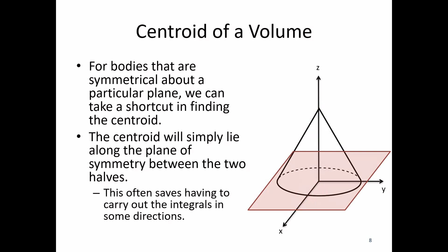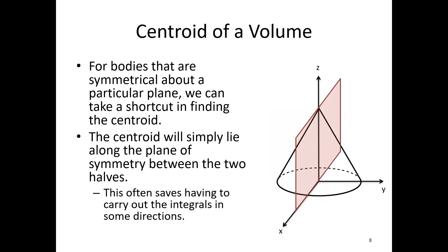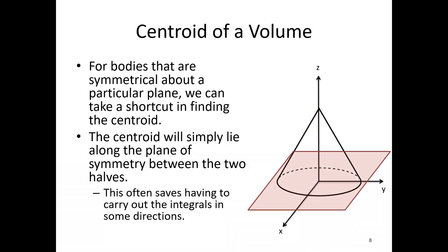The one direction that doesn't work is you can't draw a flat cross section in the xy plane, or anything parallel to the xy plane, where the top and bottom would be mirror images. If you moved it up, it'd be like an hourglass shape, or moved it down it'd be almost like a football shape — there's no way to make the top and bottom mirror images of this cone. So that's the one I actually have to calculate. In the xz and yz planes the shape is symmetrical, so I don't have to do the integration — I can just know that the centroid lies on those planes of symmetry.